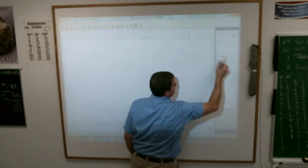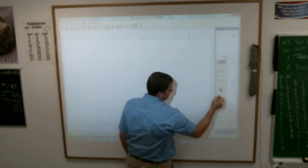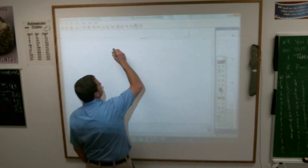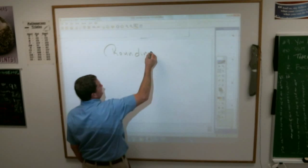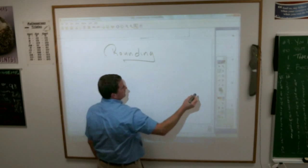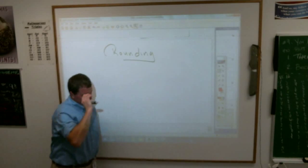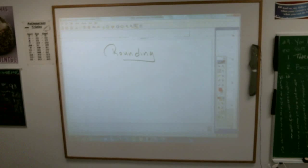The first one is rounding. What does it mean to round something? Why do we round?